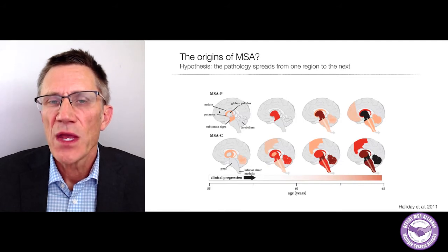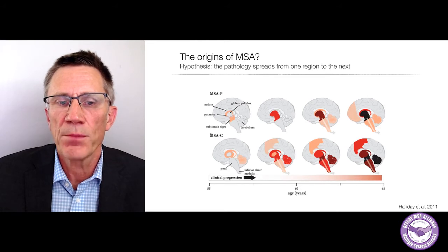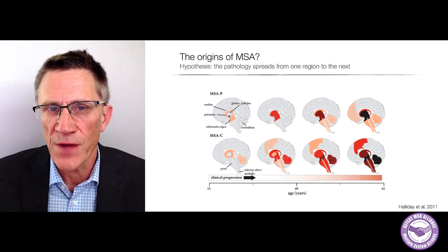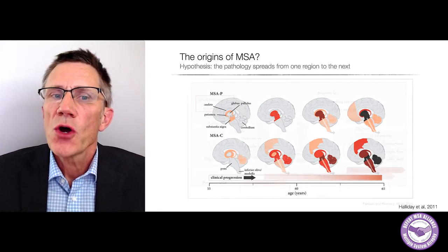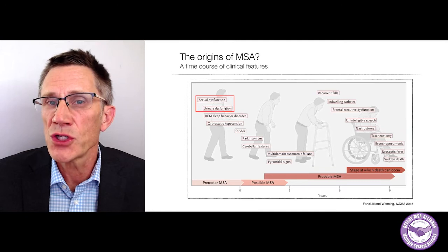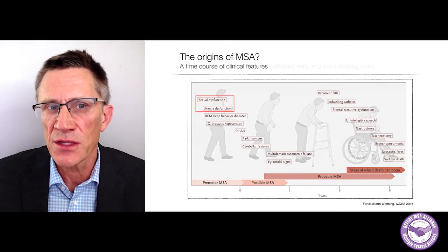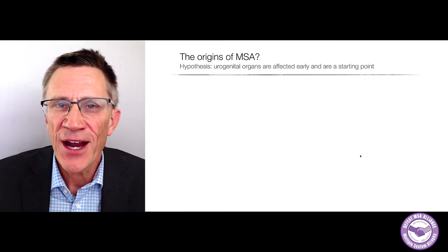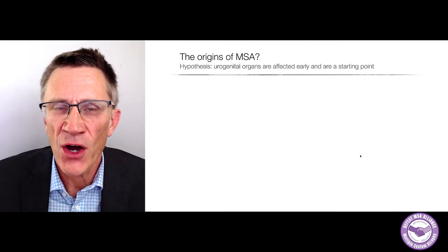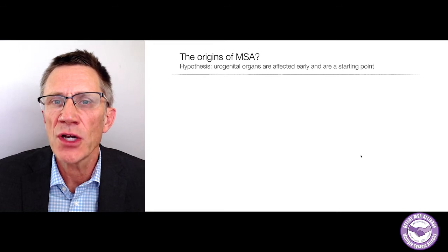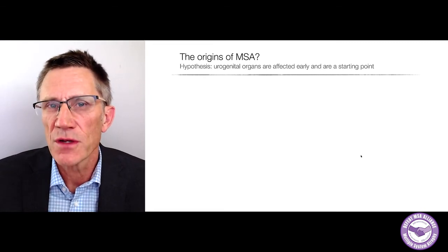We also know that the disease pathology spreads as the disease gets worse, and we know where it tends to start. We have some clues about what parts of the brain and the peripheral nervous system are affected early. Perhaps we can learn about the origins of MSA by looking at what could be the origins of sexual dysfunction and urinary dysfunction in the disease.